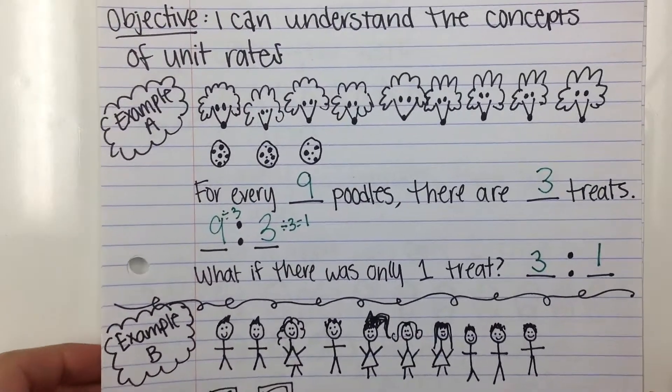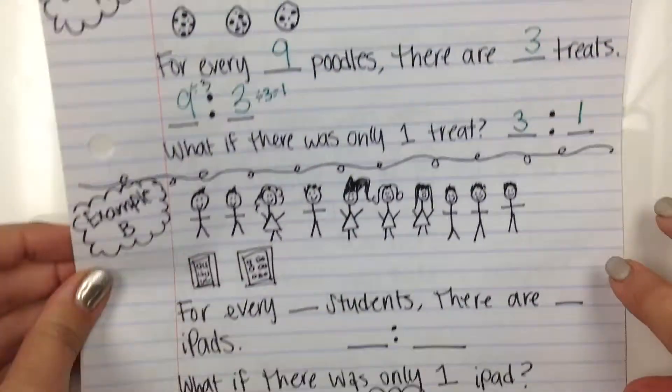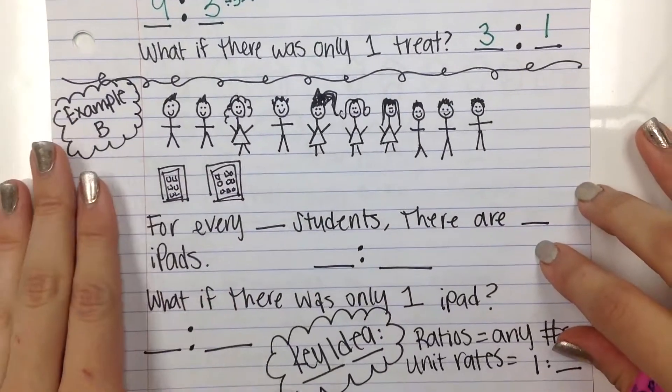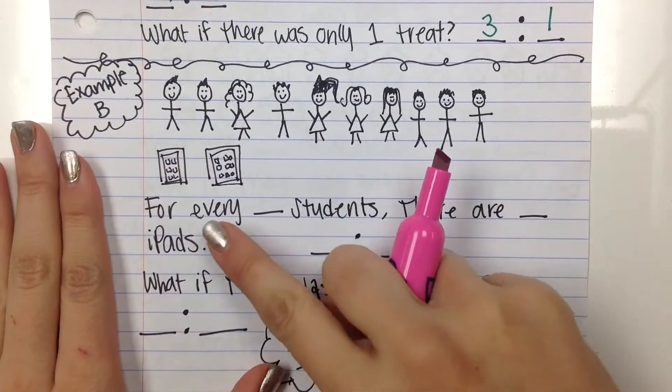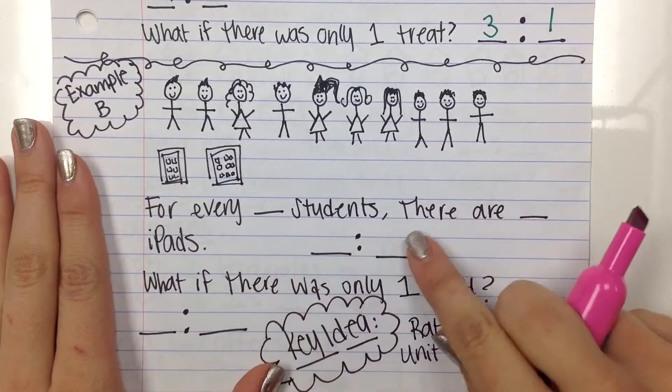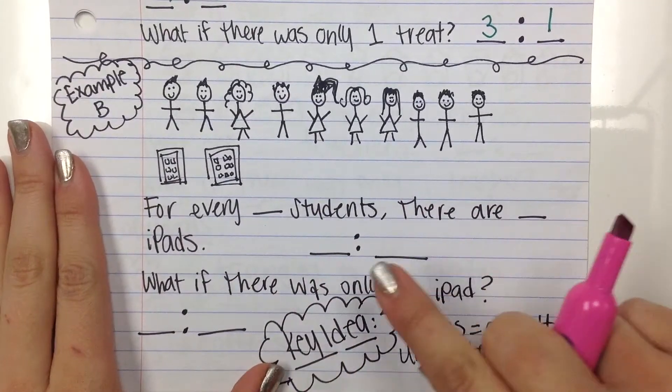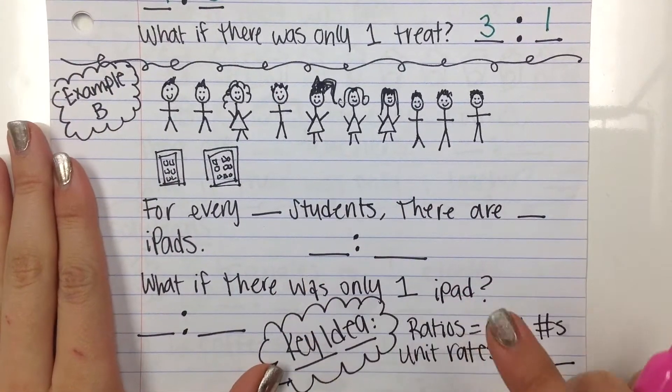Okay, and to continue on with Example B: for every blank number of students, there are blank iPads.